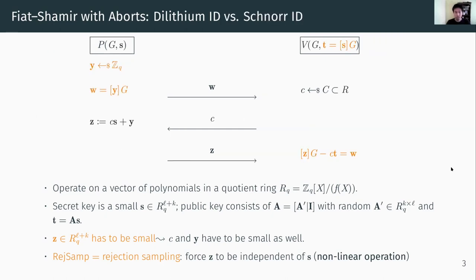Fiat-Shamir with abort paradigm is somewhat similar to the Schnorr identification protocol, at least syntactically. You can see some correspondence by replacing the public matrix with a base point and the randomness with a uniformly generated nonce from the integers modulo the group order. But of course, in Schnorr identification there's no rejection sampling, so there's some subtle difference.